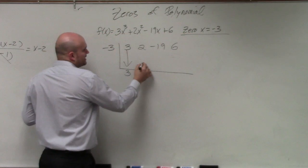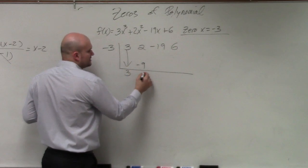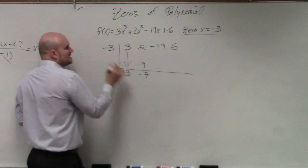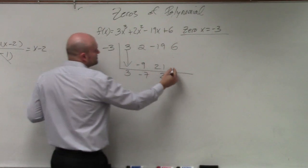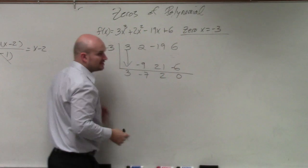3 times 3 is negative 9. 2 plus negative 9 is negative 7. Negative 7 times negative 3 is 21. Negative 19 plus 21 is positive 2. 2 times 3 is negative 6, remainder 0.